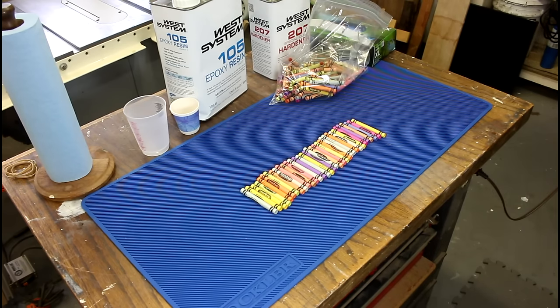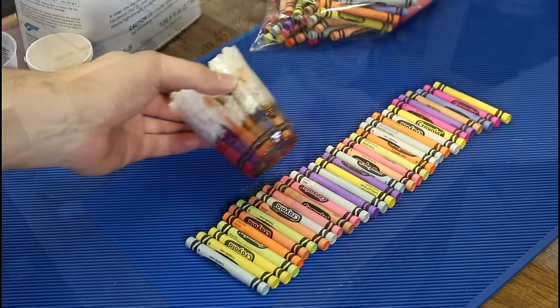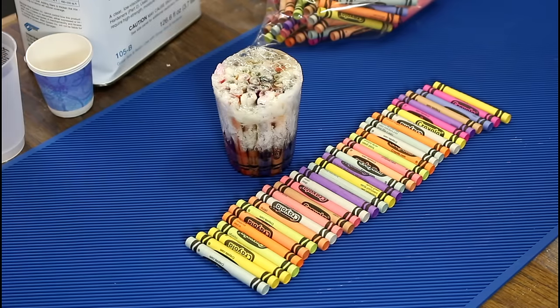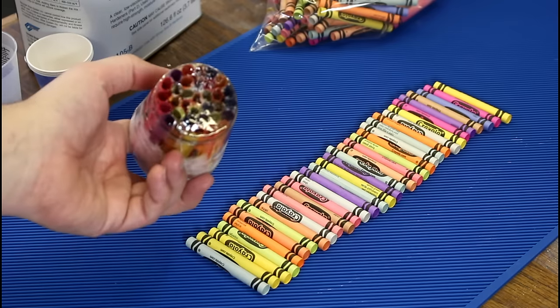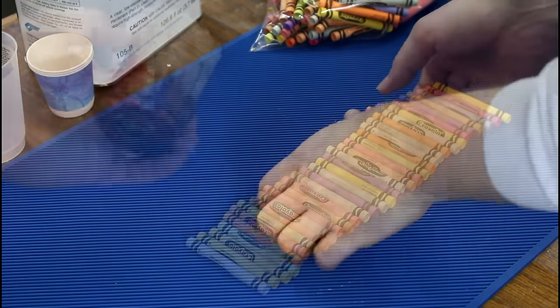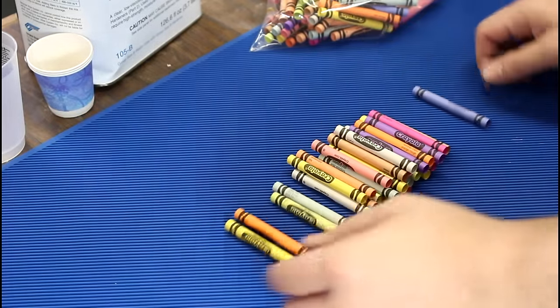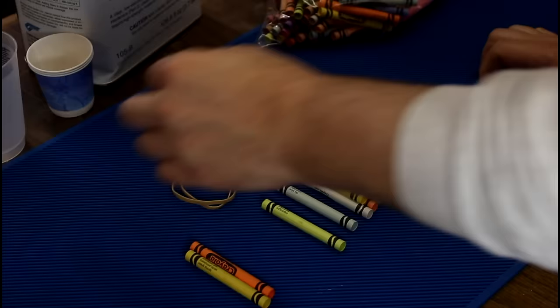I did a test run, and as you can see it didn't go so well. But I did find out that 33 crayons is a good solid bottom. The easiest way to get these into some sort of a shape is to just use a couple of rubber bands.